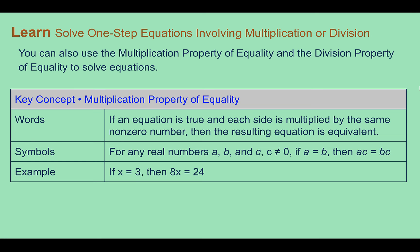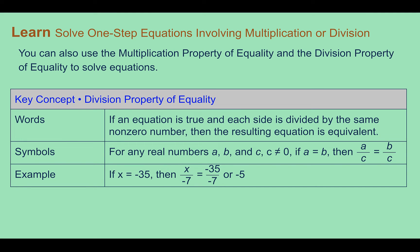Let's learn to solve one-step equations involving multiplication or division. Just like the addition and subtraction properties, there's also the multiplication property and division property of equality. The multiplication property says if you multiply the same thing to both sides, your equation is still true — generally, c cannot equal 0. The division property is similar: if you divide both sides by the same thing, you still get a true equation. You definitely cannot divide by 0, as that gives an undefined answer.